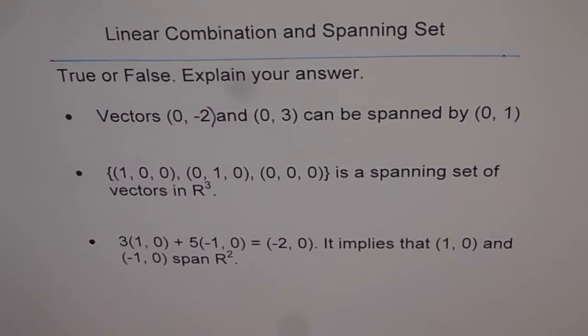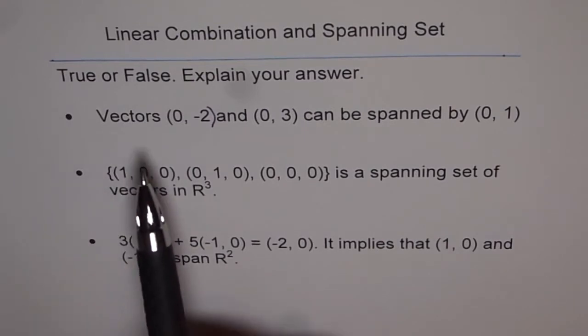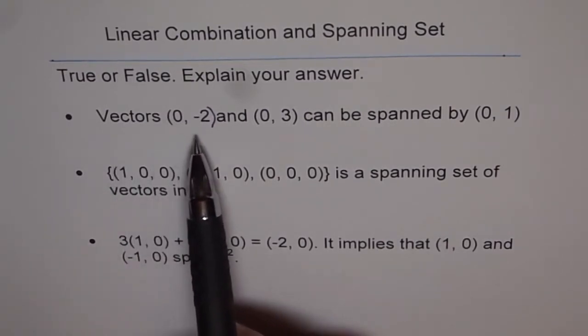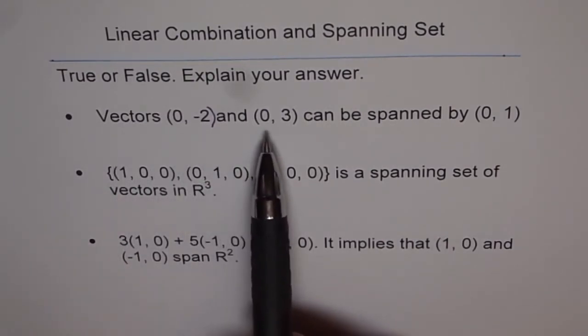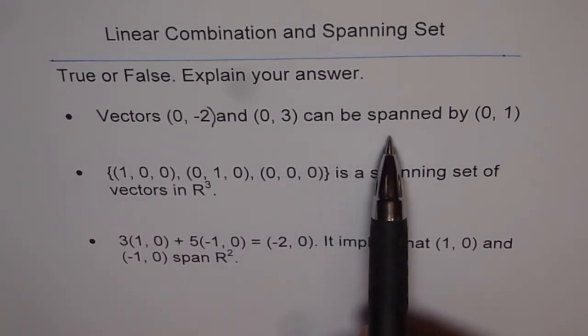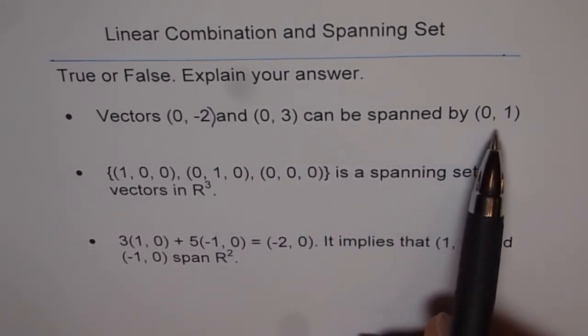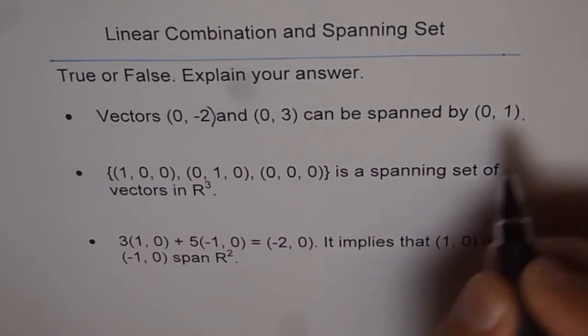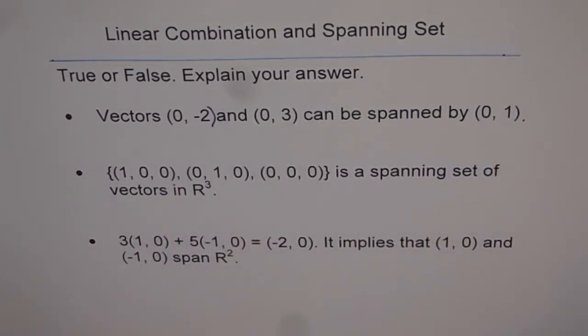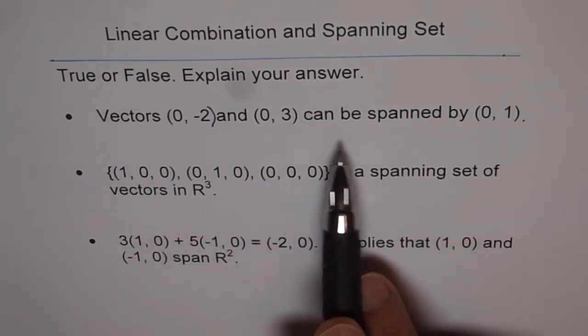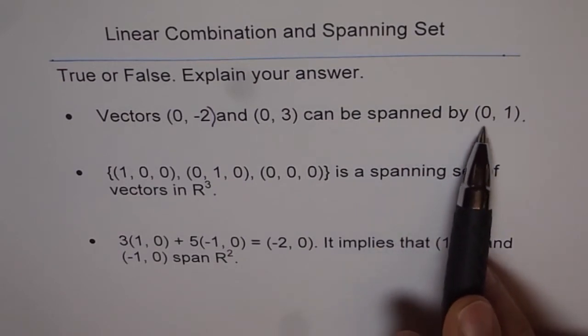I would like you to explain answers for each question and then listen to my suggestion. First one is vectors (0,-2) and (0,3) can be spanned by (0,1). So we are given two different vectors here and you have to answer that these can be spanned by (0,1).